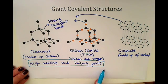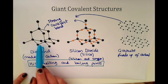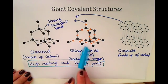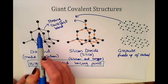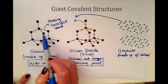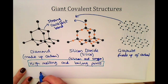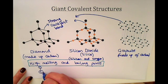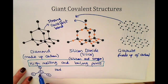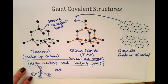Giant covalent structures have high melting and boiling points, which makes them very hard and very difficult to break down, as in the case of diamond and silicon dioxide. Diamond is composed of one carbon atom bonded to four other carbon atoms, and it is this structure — with strong covalent bonds between each carbon and its four neighbours — that makes diamond very hard.